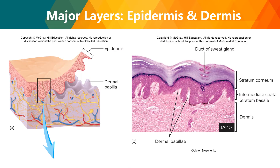The skin is made up of two major tissue layers. The first is your epidermis, the most superficial layer of the skin — a layer of epithelial tissue that rests on the dermis. The next layer is your dermis, a layer of dense connective tissue that rests on subcutaneous tissue, which is not part of the skin.